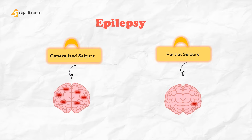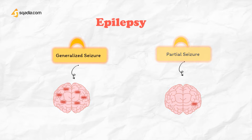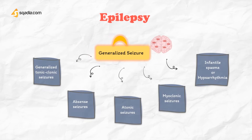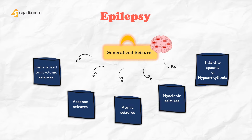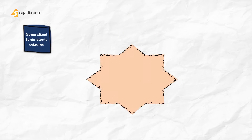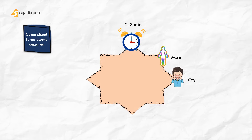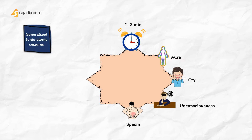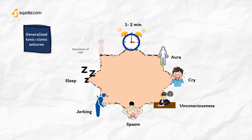Generalized seizures further include generalized tonic-clonic seizures, which are common and last for one to two minutes. The usual sequence is aura, cry, unconsciousness, tonic spasm of all body muscles, clonic jerking, followed by prolonged sleep and depression of all CNS functions.